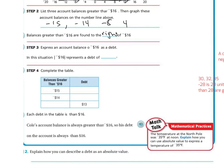Step 3 says, express an account balance of negative 16 as a debt. In this situation, the absolute value of negative 16 represents a debt of 16. So remember, it's 16 spaces away from the zero.